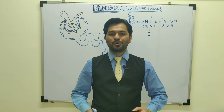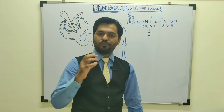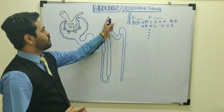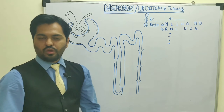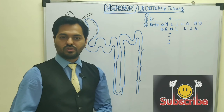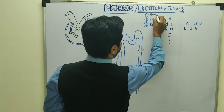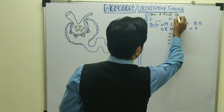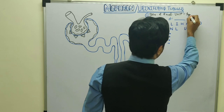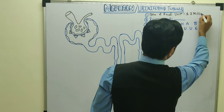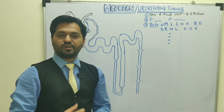Hello future doctors, welcome to Dipenism. I am Dr. Dipensha and in today's lecture we will discuss a very important structure — the structure of the nephron. Nephron is also known as the urinary tubules because here the major function of urine formation occurs. Hence, nephron is considered as the structural and functional unit of the kidney, and each kidney has around 1 to 1.2 million nephrons.